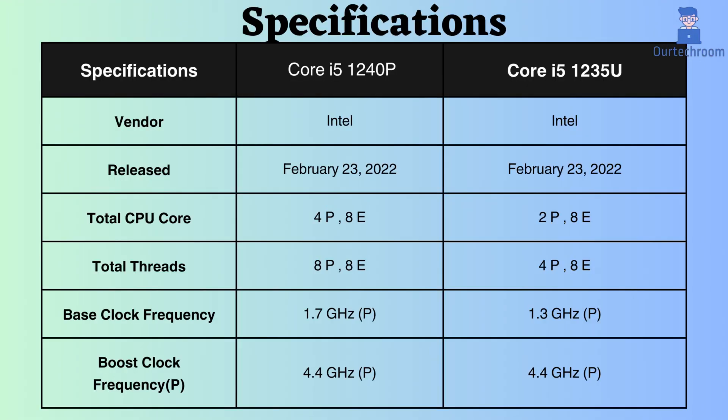Both processors were released on February 23, 2022. The Core i5-1240p features 4 performance cores and 8 efficiency cores, whereas the Core i5-1235u has 2 performance cores and 8 efficiency cores. Additionally, the Core i5-1240p boasts 8 performance threads and 8 efficiency threads, whereas the Core i5-1235u has 4 performance threads and 8 efficiency threads. Due to its greater number of cores and threads, the Core i5-1240p can handle more simultaneous tasks more efficiently.